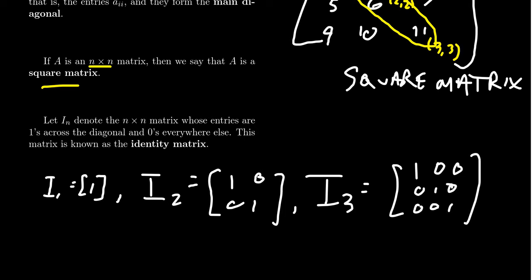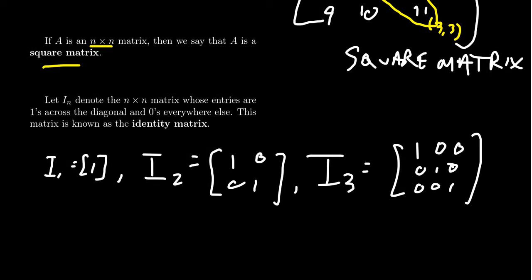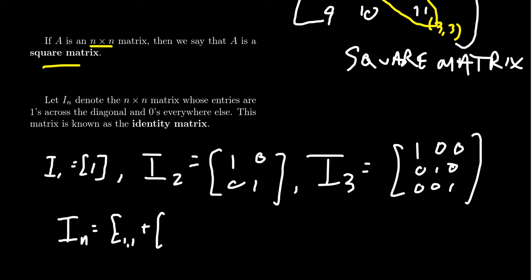You can keep going with this idea — the matrix depends on the subscript. These are called the identity matrices: the 1×1, 2×2, 3×3 identity, and so on. The identity matrix gets its name because it will be the multiplicative identity for matrix multiplication. In general, I_n is the sum of E_11 + E_22 + E_33 + ... + E_nn, where the E_ij are the unit matrices introduced previously.